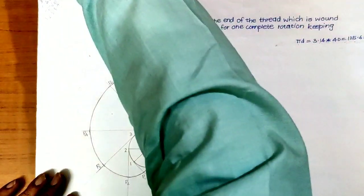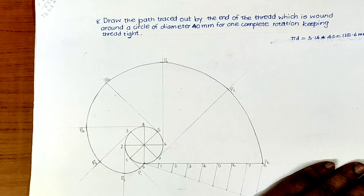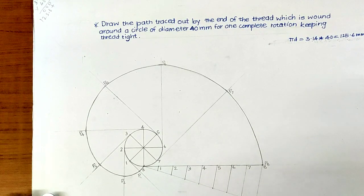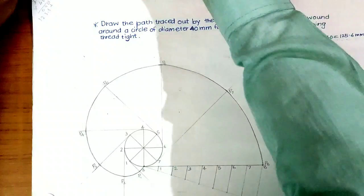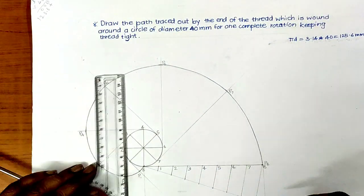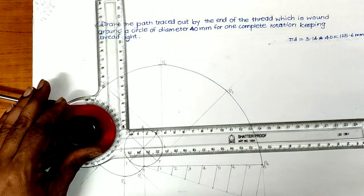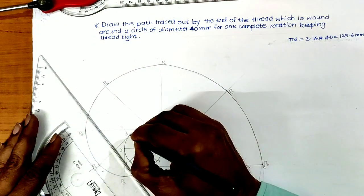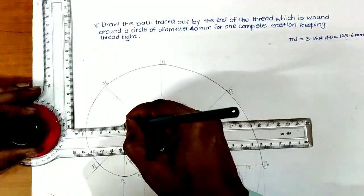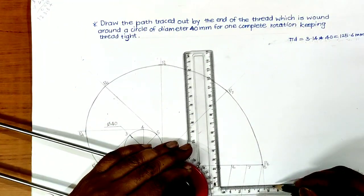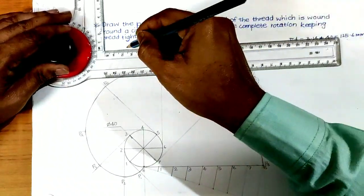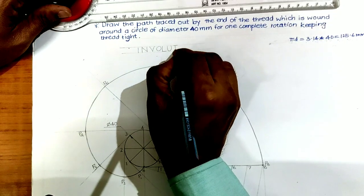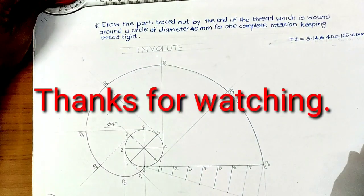This completes involute of a circle. It can give dimensions as well. Thanks for watching.